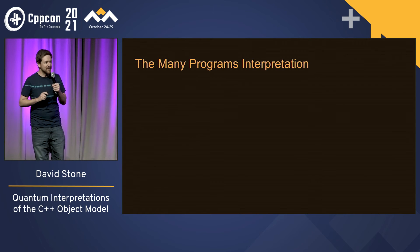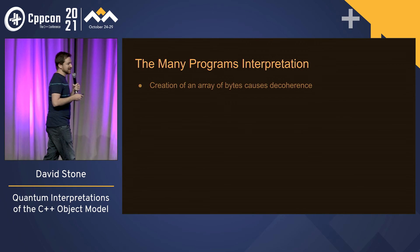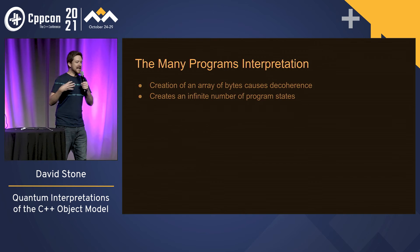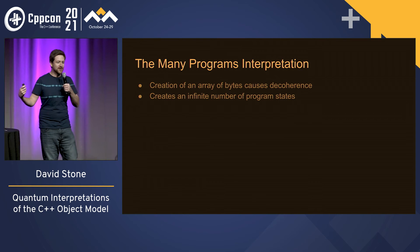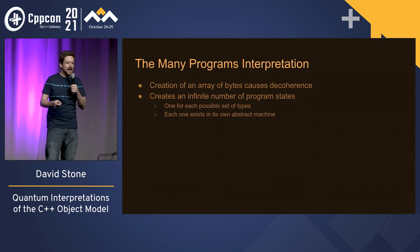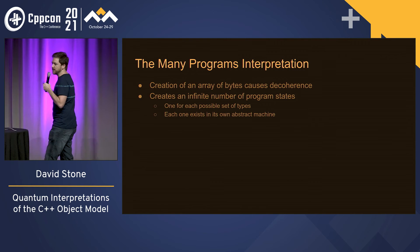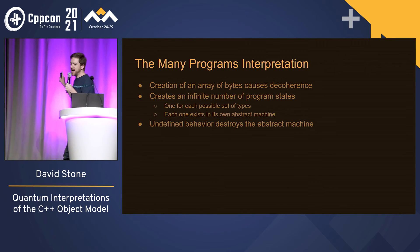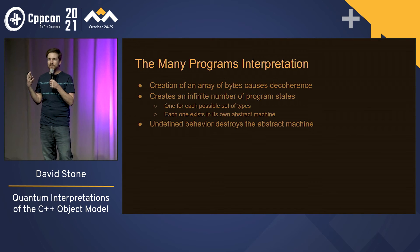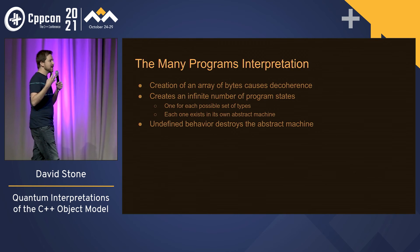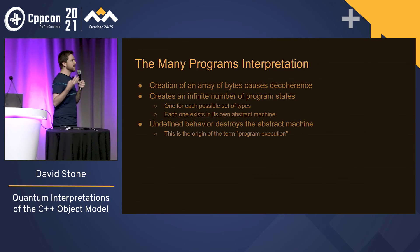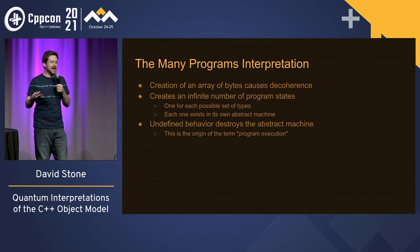Or there's the many programs interpretation — this is the one I prefer. It basically says that creation of an array of bytes causes decoherence, and this creates an infinite number of program states across an infinite number of abstract machines, one for each possible set of types, each existing in its own abstract machine. The important thing here is that undefined behavior destroys the abstract machine, or the universe. This is a form of quantum immortality — programs that contain defined behavior survive, and those that do not are destroyed. This is the origin of the term 'program execution', because most programs are executed.